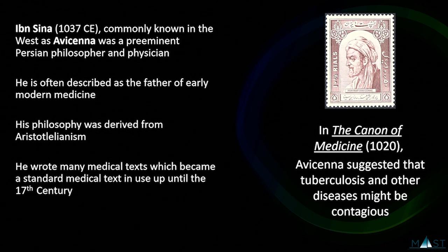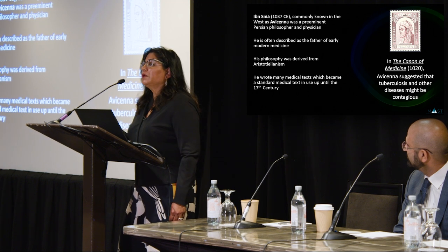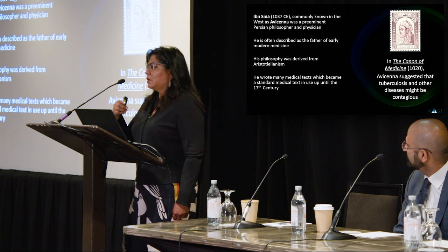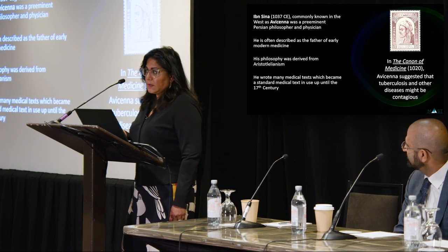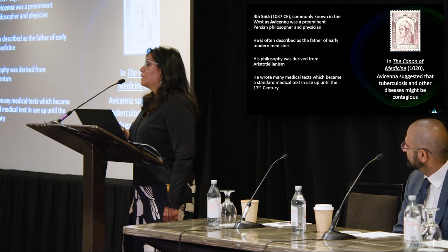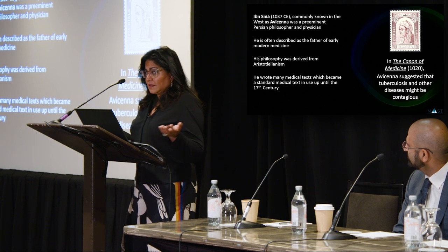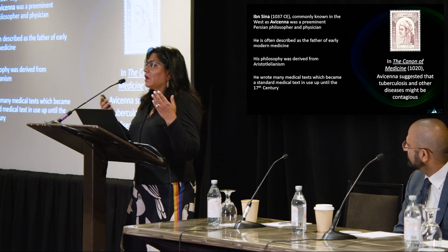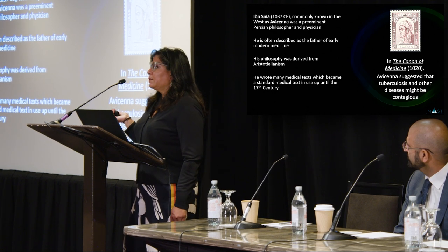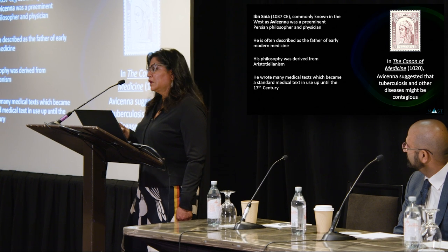Fast-forwarding to the first millennium: a Persian philosopher and physician named Ibn Sina was considered one of the forefathers of medicine. In his Canon of Medicine, he discussed the possibility that diseases like tuberculosis are contagious — they can jump from one person to another. This concept of communicability and a vector between people became more popular, and his work remained seminal in medical literature through the Middle Ages up until about the 1700s.